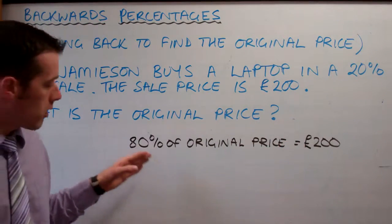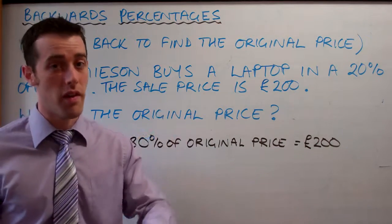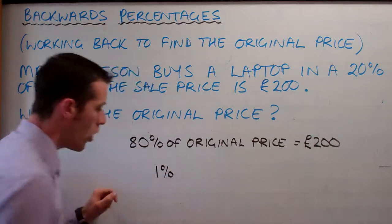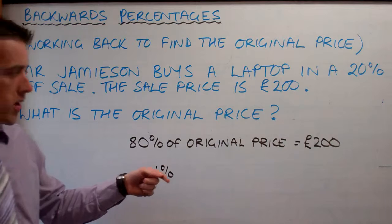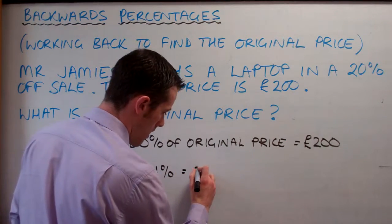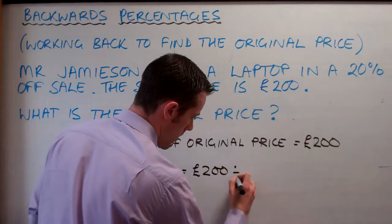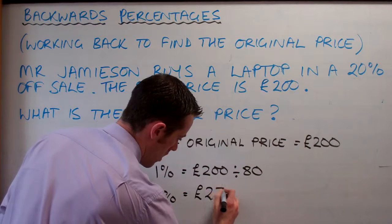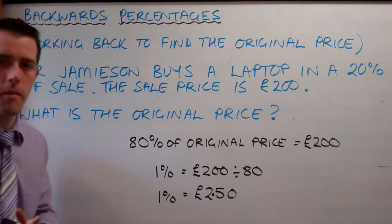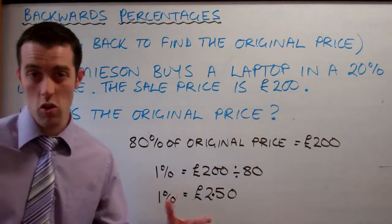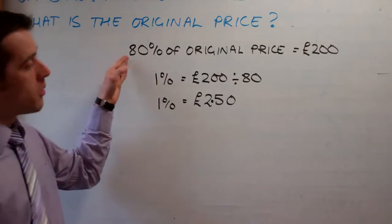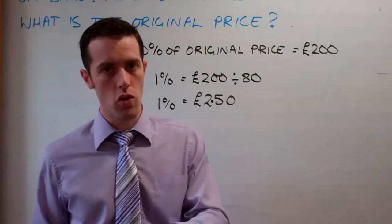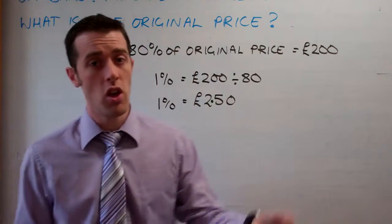The way we do this is we need to work from 80% back up to 100. The best way is to figure out what 1% is first. So if we've got 80% already, we figure out 1% by dividing by 80. We take our £200 and divide by 80.